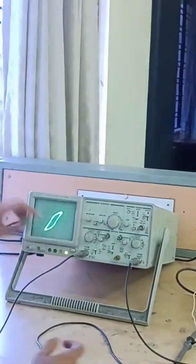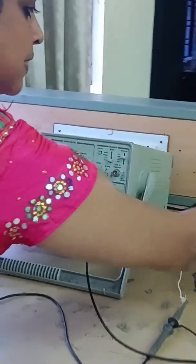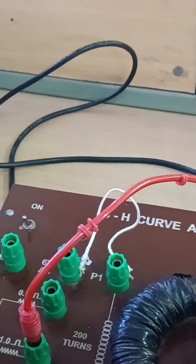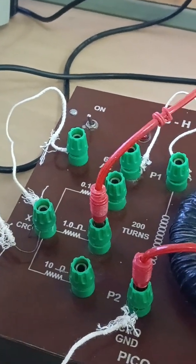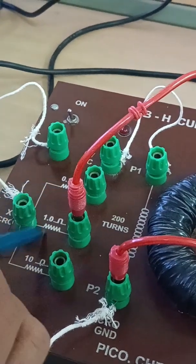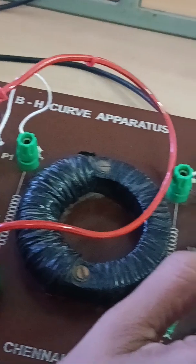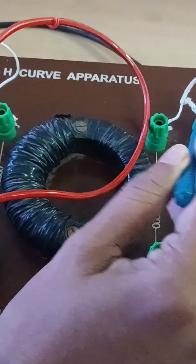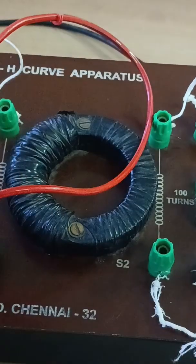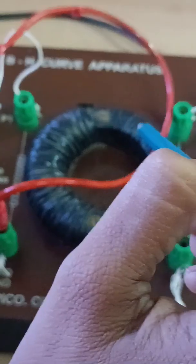Now this is BH curve apparatus. Here the resistance varies 0.1 ohms, 1.0 ohms, and 10 ohms. The capacitance is 4.7 microfarads. Here we already have the connecting wires according to the circuit diagram.